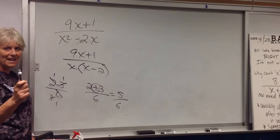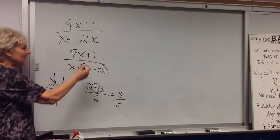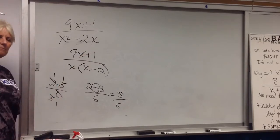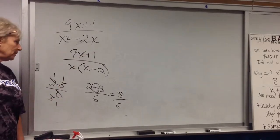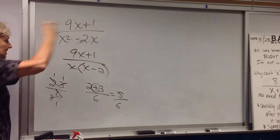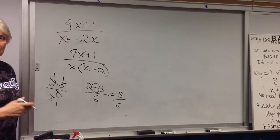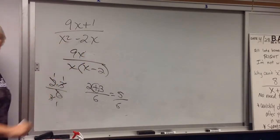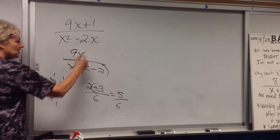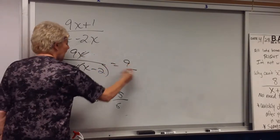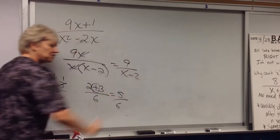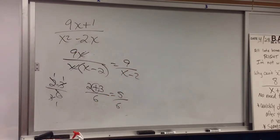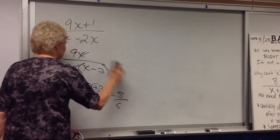But when you have addition, you cannot. And you're going to have to remember that. Because a lot of kids want to cross out letters or variables or numbers that are the same on the top and the bottom, but you can only do it if it was. Now you can do it because that's nine X over X. Final answer, nine over X minus two. You can cancel with multiplication. You cannot cancel with addition.